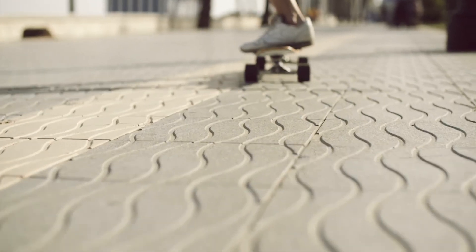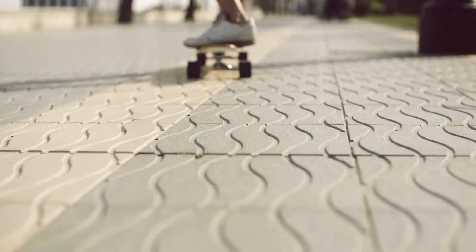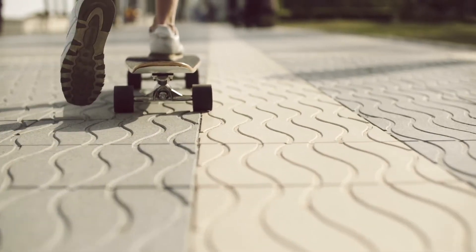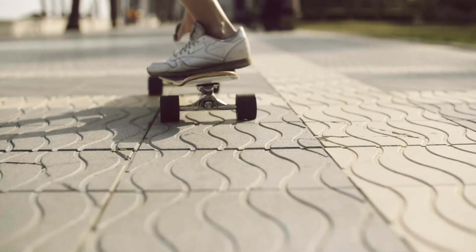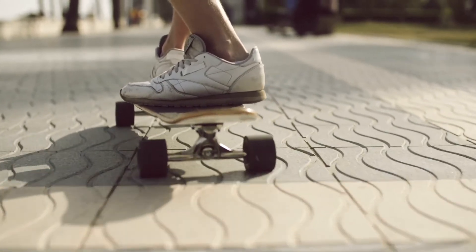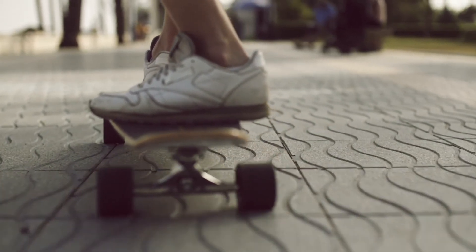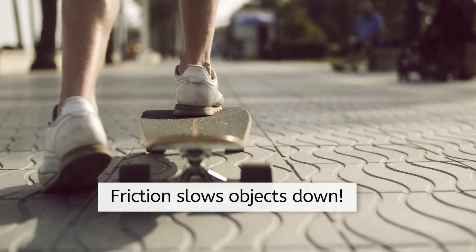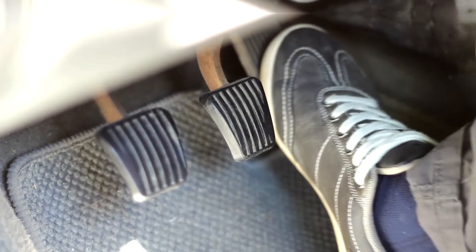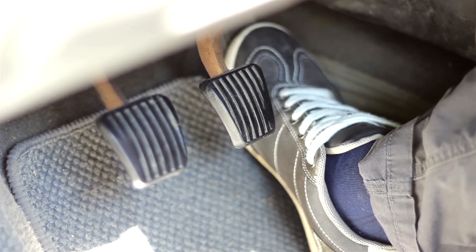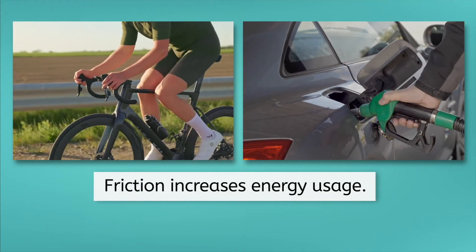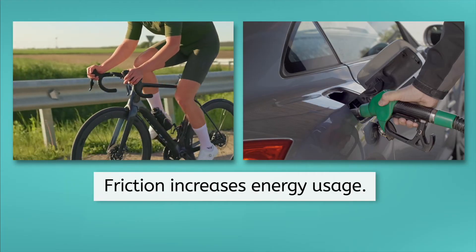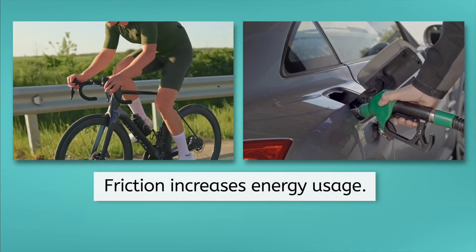Earlier in this lesson, we used an example of a skateboarder needing to constantly push with their foot in order to keep moving. This is true even on flat ground, and occurs because friction between the wheels of the skateboard and the ground acts to slow the skateboard. Without a constant force from the rider's foot, the skateboard will quickly come to a stop. Friction always acts to slow objects down, and is also why you must keep pushing on the gas pedal of a car to keep it moving. So another downside of friction is that it causes an increase in energy usage, whether we mean manual energy from our own bodies, or energy in the form of fuel.